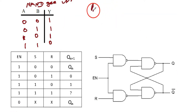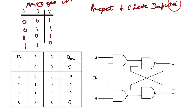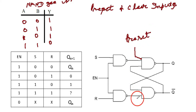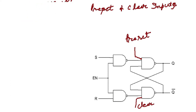Now the very important part: what do we mean by preset and the clear operation with respect to flip-flops? We are introducing one more input to this NAND gate — it is called the preset. And we are introducing here one more input called the clear. So two inputs are introduced: one is preset and one is clear, to the NAND gate.